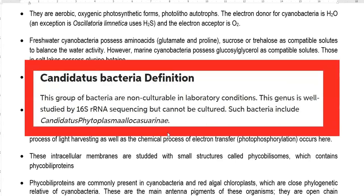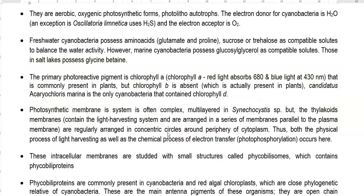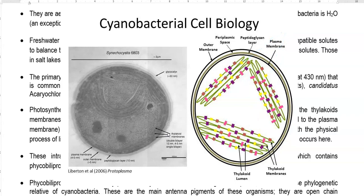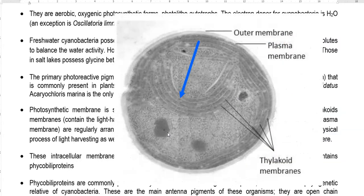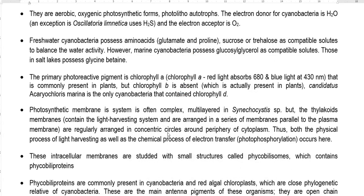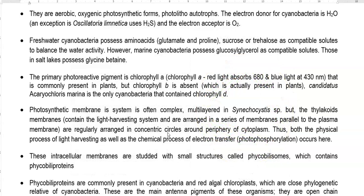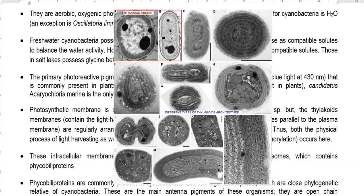Candidatus refers to organisms studied only through 16S rRNA gene sequencing, for which pure culture isolates are not available. The photosynthetic membrane system is often more complex in cyanobacteria and is multilayered in Cyanocystis. The thylakoid membranes are regularly arranged in concentric circles around the periphery of the cytoplasm, arranged parallel to the plasma membrane to intercept and fully utilize light. Both the physical process of light harvesting and the chemical process of electron transfer through photophosphorylation occur on the thylakoid membrane system.